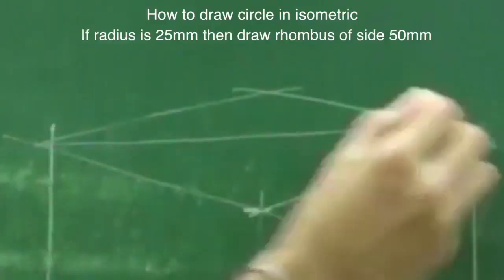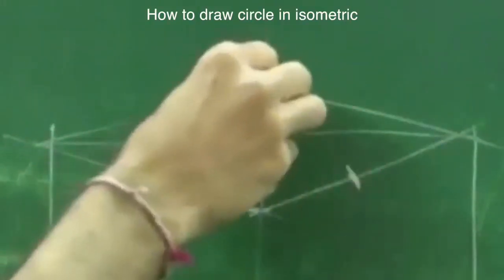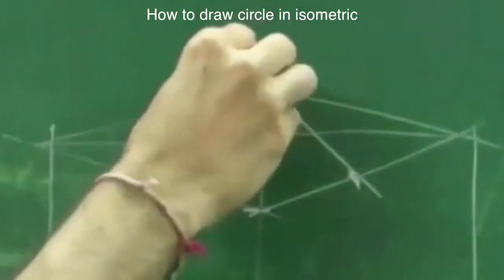See, after drawing rhombus first you draw longest diagonal. You mark midpoint and from opposite corner you can draw this line.